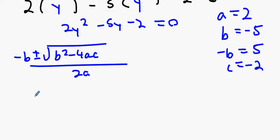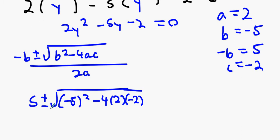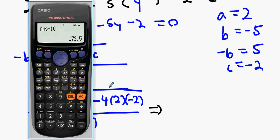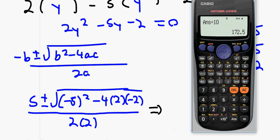Okay, 5 plus or minus the square root of minus 5 squared minus 4 times 2 times minus 2, all over 2 times 2. Okay guys, let's have a look at this now. So, you might want to do this on the calculator. So everybody take out the calculator and give it a go.